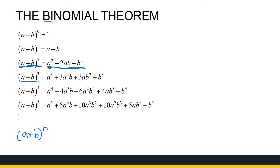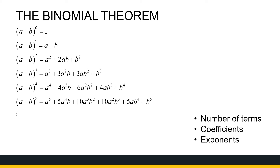We're going to deduce the theorem by looking at patterns — we're not proving it, simply observing. The first thing to look at is how many terms are in each expansion. To the power 1 gave 2 terms, to the power 2 gave 3 terms, to the power 3 gave 4 terms, to the power 4 gave 5 terms, to the power 5 gave 6 terms. So a plus b to the power n has n plus 1 terms — the number of terms is 1 more than the exponent.